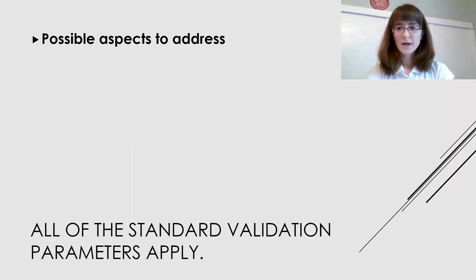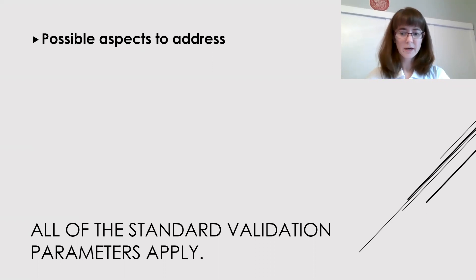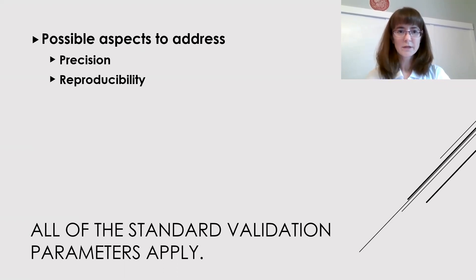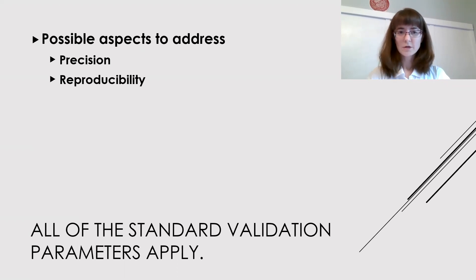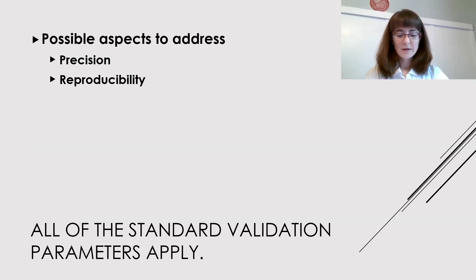As you're thinking about validating an immunoassay, the first thing to realize is that it's no different in some ways from any other analytical assay. All of the standard validation parameters apply. That means you're going to be looking for things like precision and reproducibility. For precision, you would be thinking about the coefficient of variation from repetitions of the assay repeatedly on the same sample. For reproducibility, you would be thinking about how similar the results are from person to person, day to day, instrument to instrument, run to run, and lab to lab.